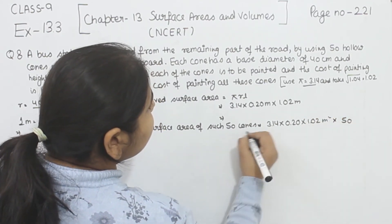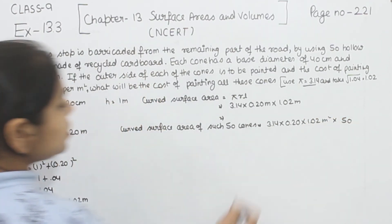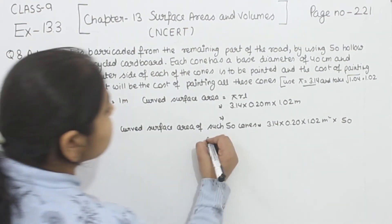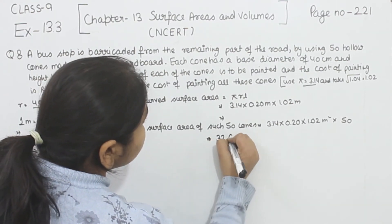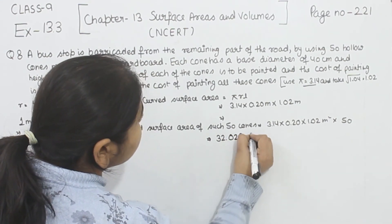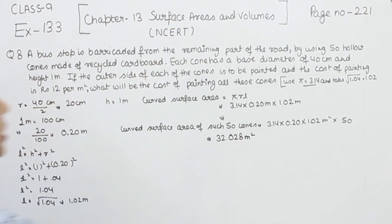This is the curved surface area of the 50 cones. Multiplying this out, we get the value of 32.028 meter square. This is the curved surface area of the 50 cones.